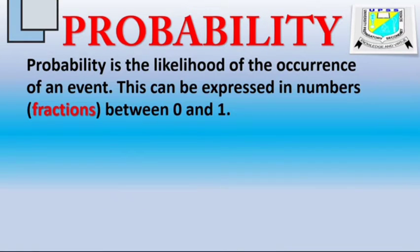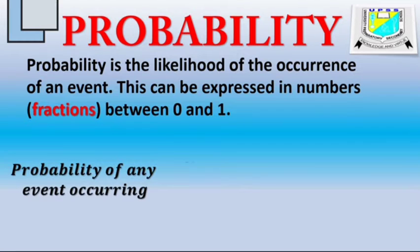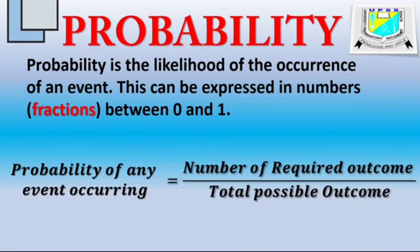In general, we have it that the probability of the occurrence of any event is given as the number of required outcomes over the total possible outcome.